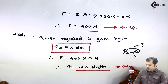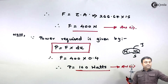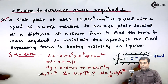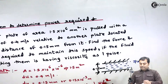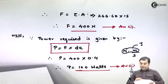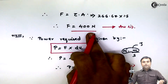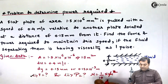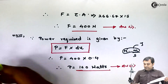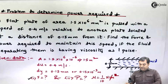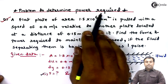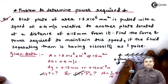So looking at this question, there were two things asked: the force required for the fluid to flow, which is 400 newton, and the power required, which is 160 watts. With this we have found both answers and completed the problem.